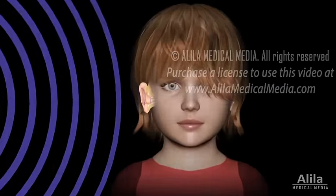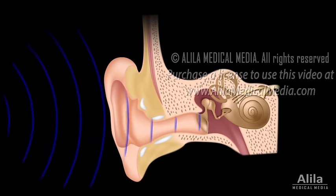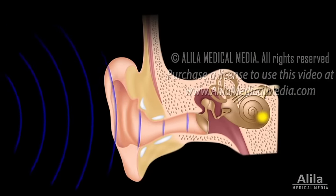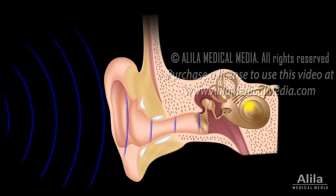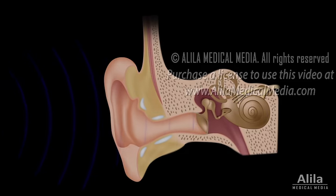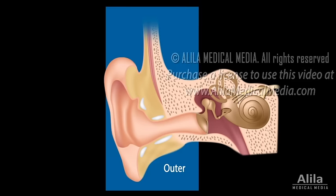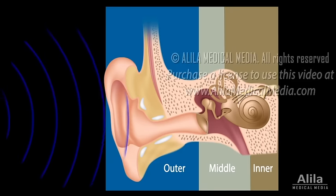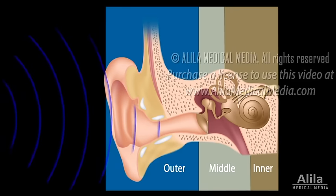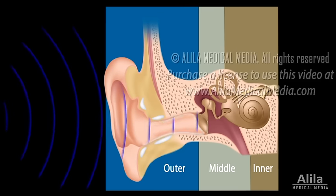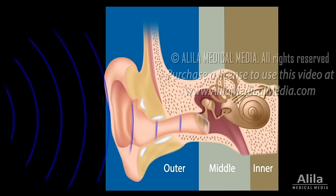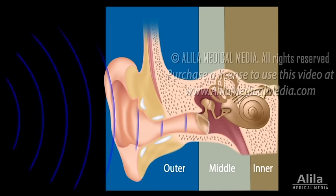Hearing is the process by which the ear transforms sound vibrations into nerve impulses that can be interpreted by the brain as sounds. The human ear has three distinct regions, called the outer, middle, and inner ear. The outer ear funnels sound waves through the auditory canal to the tympanic membrane, also called the eardrum, which separates the outer ear from the middle ear.